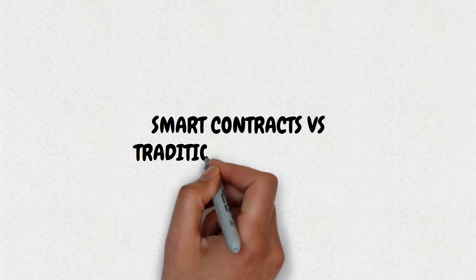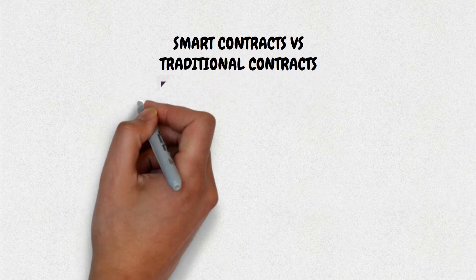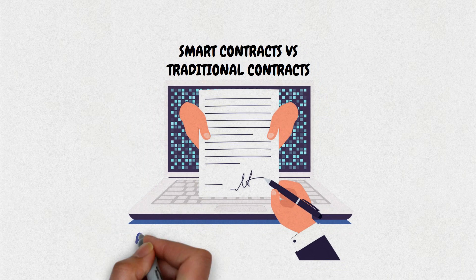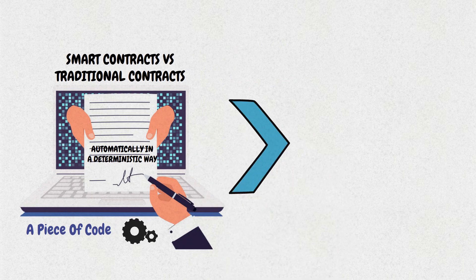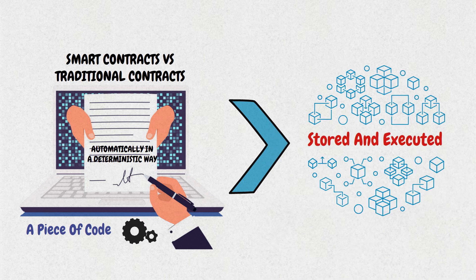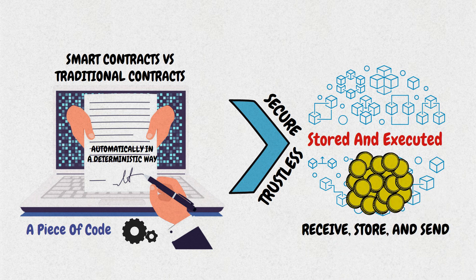Smart contracts versus traditional contracts. What is a smart contract? A smart contract is a piece of code that can be executed automatically in a deterministic way, and is usually stored and executed on the blockchain to make it trustless and secure. They have the capability to receive, store, and send funds, and even call other smart contracts.